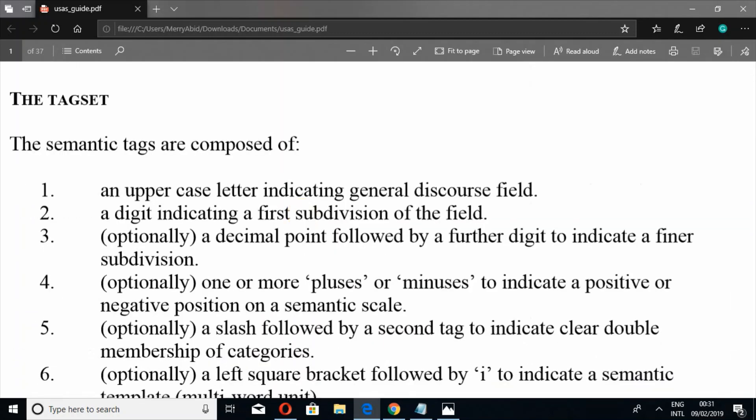Here is this file: Introduction to USAS Category System. It will tell you about semantic tags and the lexicon. This is the main thing: the tag set. The semantic tags are composed of an uppercase letter, so it will be always like A1, where A is in uppercase, and then a digit indicating a subdivision. So it will be A1 or if the word is a subdivision of a tagger, it will be A1.1.1.